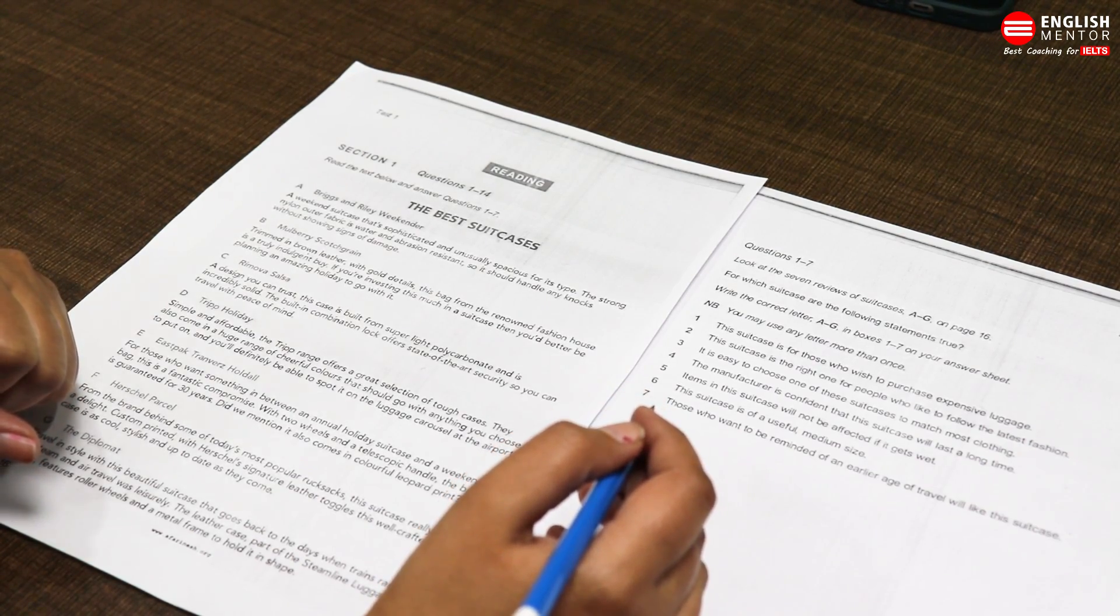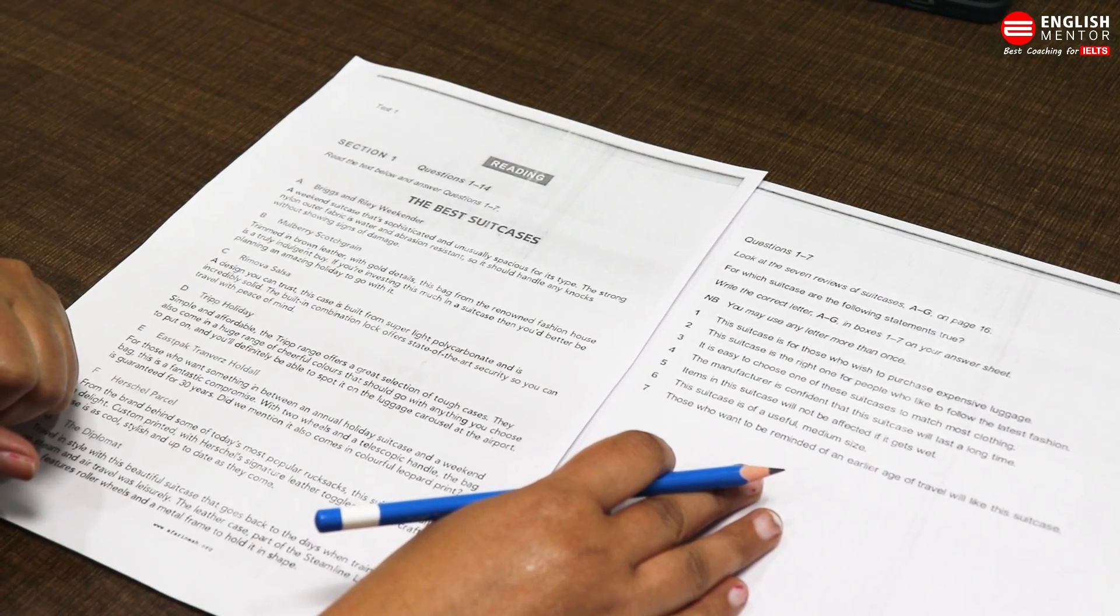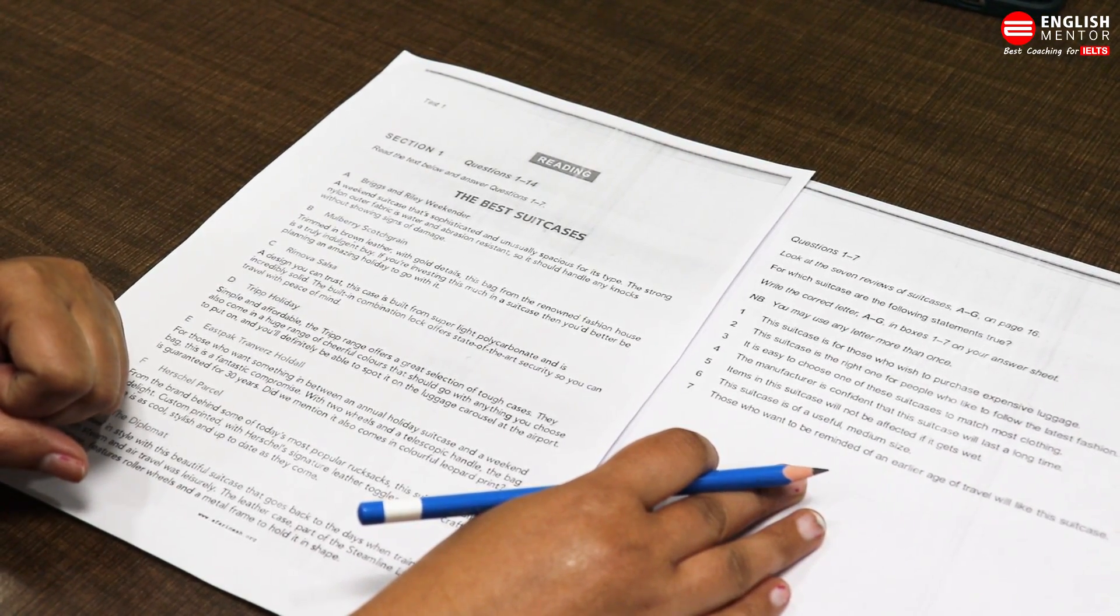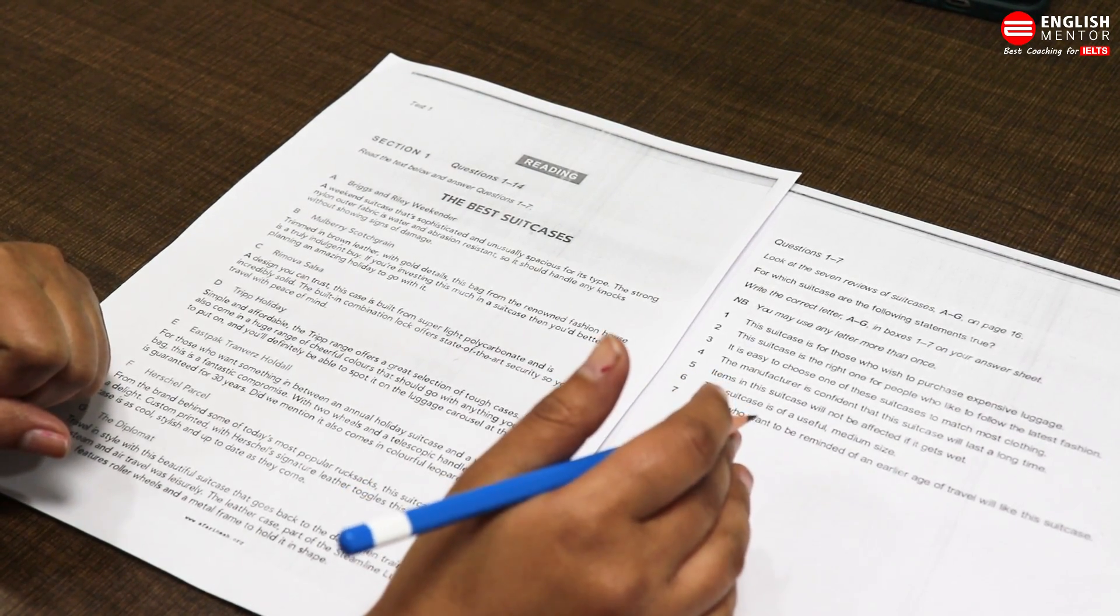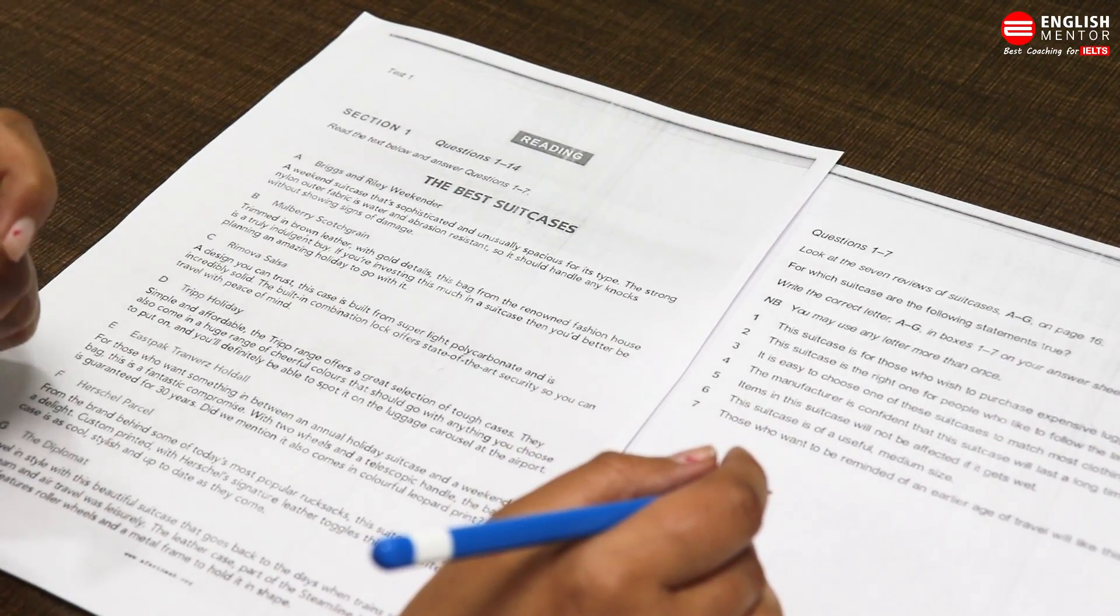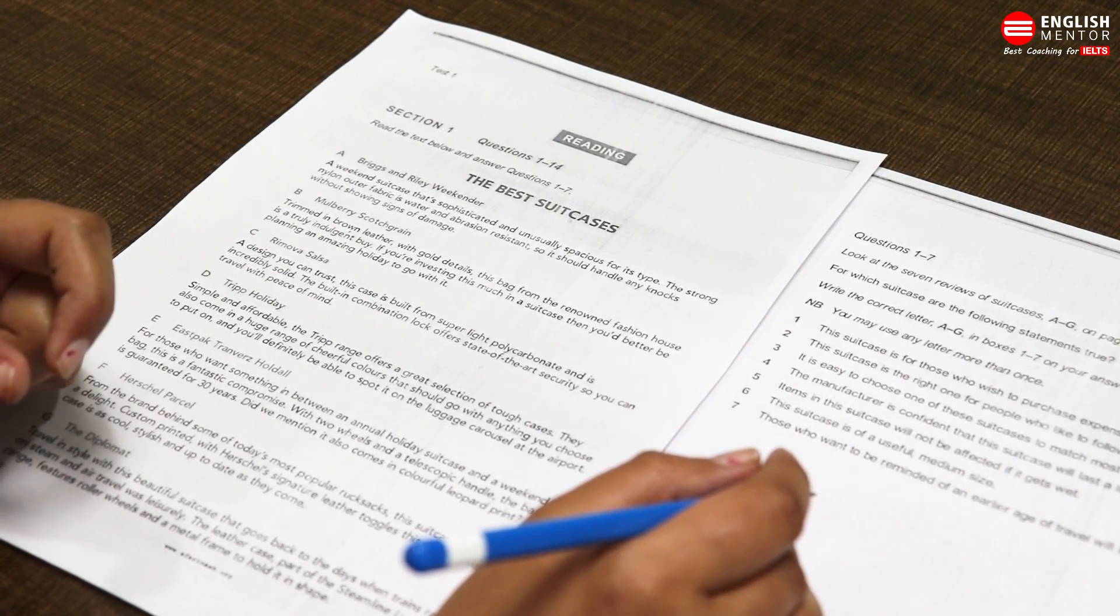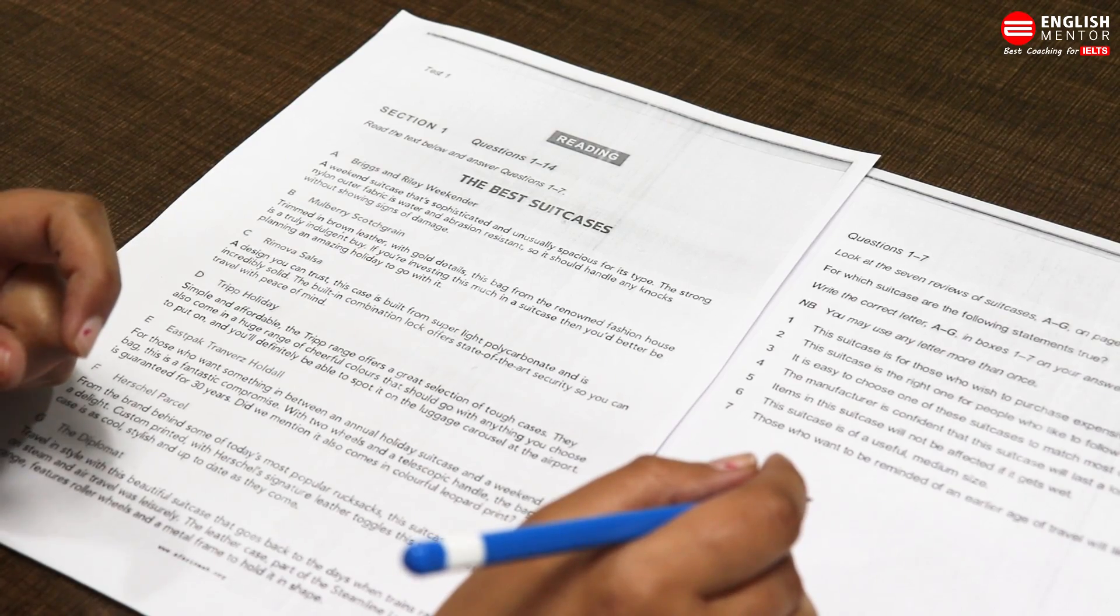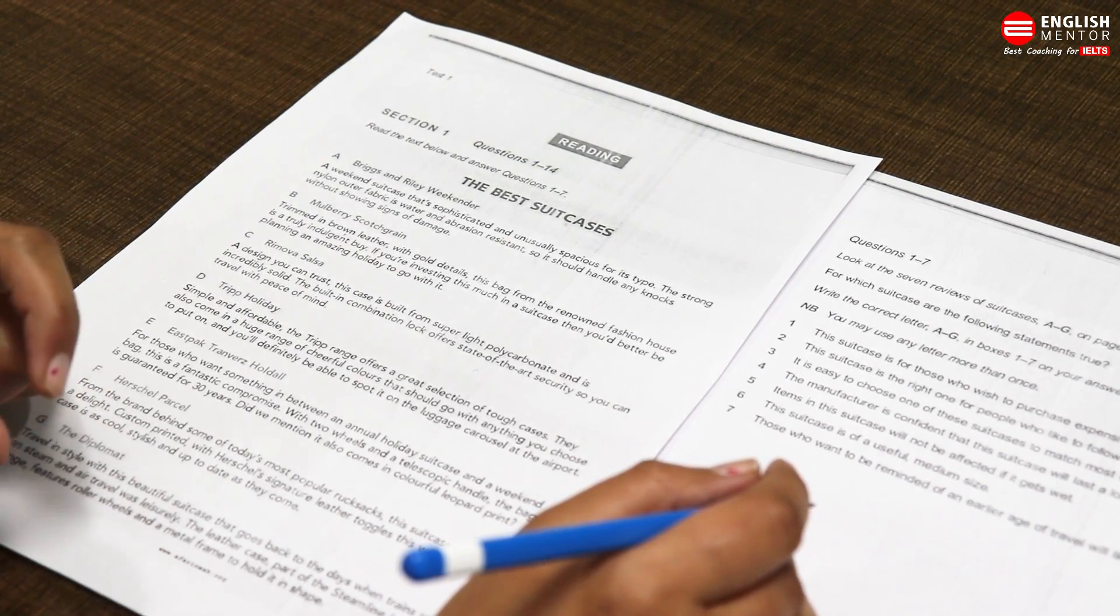We will apply the same technique for solving these kind of questions. R stands for read the questions first carefully, U means understand the demand and underline the keywords, and P for passage reading. The RUP method means we have to read the questions of the particular section. If it is related to GT or academic, then we will read the questions of a particular passage first, not all the 40 questions together.